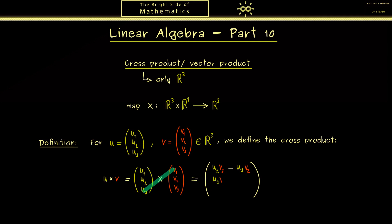We started in the middle and went one step down, which means now we start at u3 and go to the top. So in the second component we have u3 times v1, then we mirror this line so we have u1 combined with v3, and don't forget we add a minus sign in front. Now we are at position u3 and go one more step down, overflowing to u1. Starting from this position we calculate the last component: u1 combined with v2, minus u2 times v1. This is one possibility to remember the formula for the cross product.